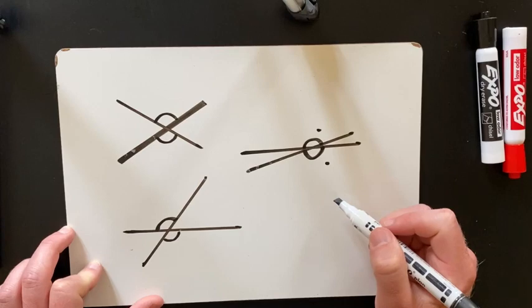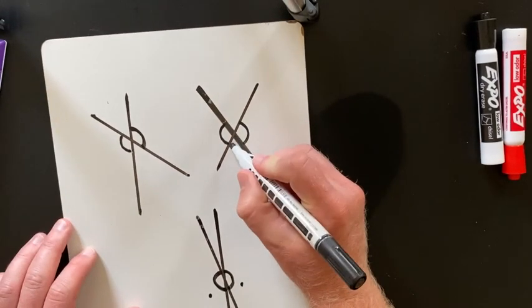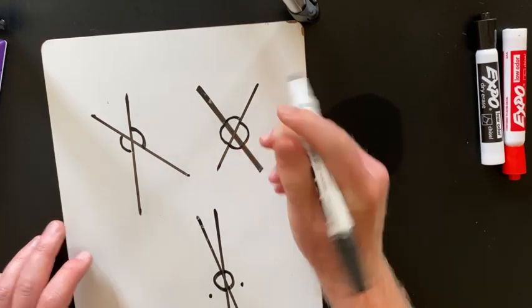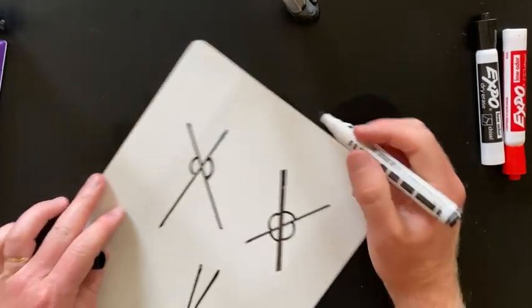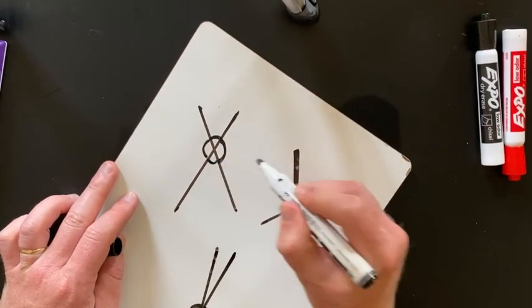And then what that also means as well, if I turn my whiteboard round, that means that this angle here will measure the same as this angle, and this angle will measure the same as this angle.